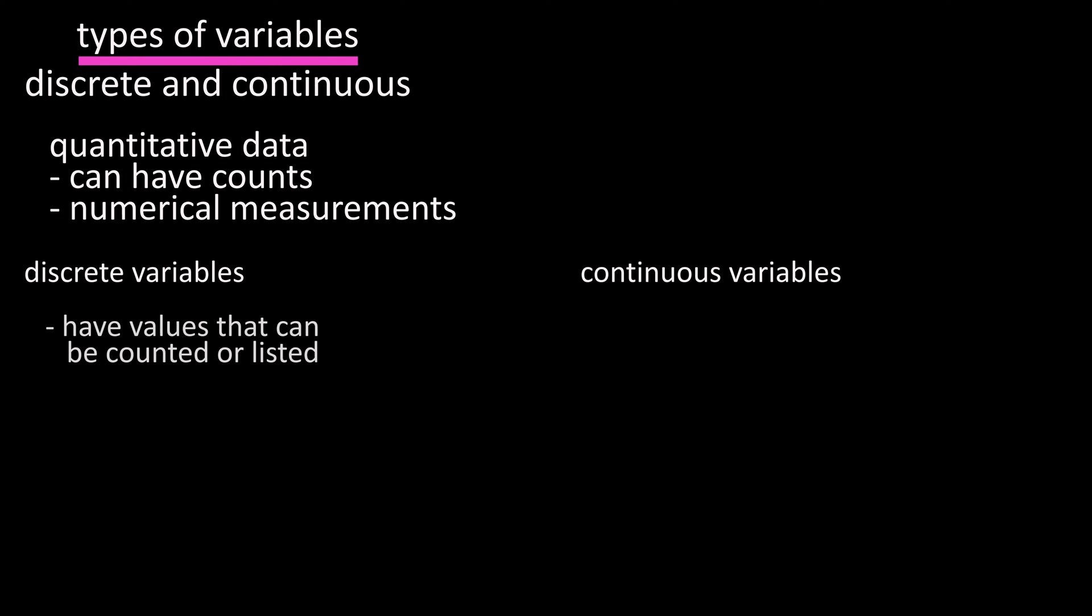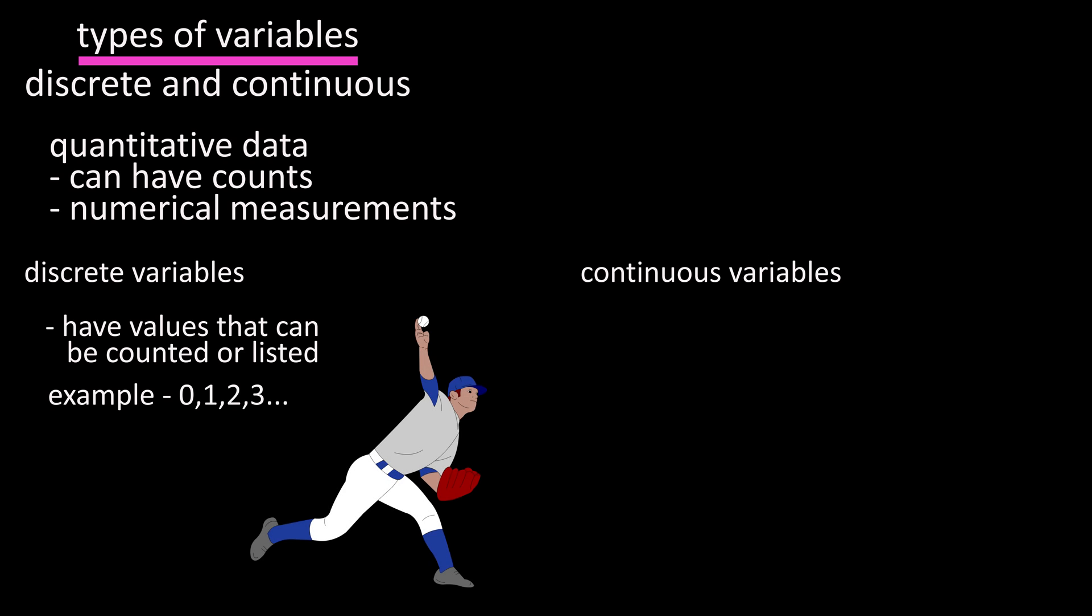Discrete variables can be assigned values that can be counted or listed, such as 0, 1, 2, and 3, which are countable. So if you were keeping a pitch count on a pitcher, you can list or count the number of pitches, but you can't have 62.5 pitches thrown, or 38.2 pitches thrown.